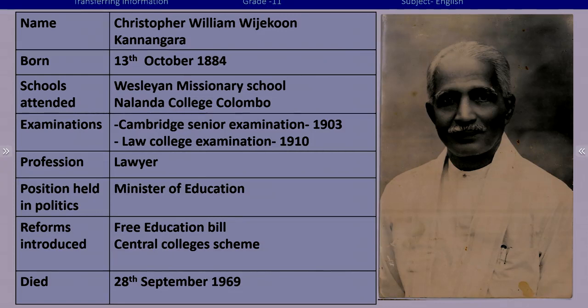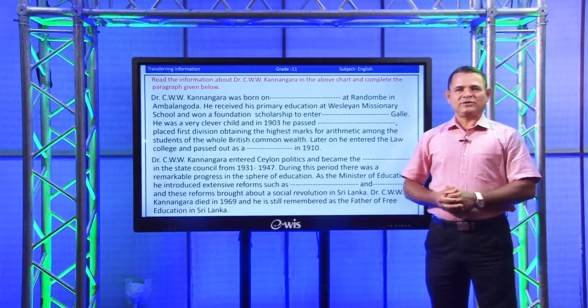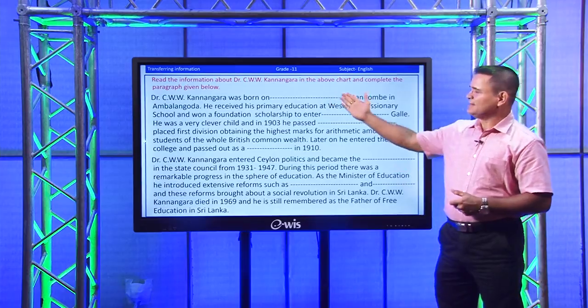All information you can see in the table: name, born, date of birth, school attended, examinations, profession, position held in politics, reforms introduced, and died. Try to remember this information — you need these things to do the next task. Let us see our task: fill in the gaps or the blanks. With that information, you have to fill in these blanks.